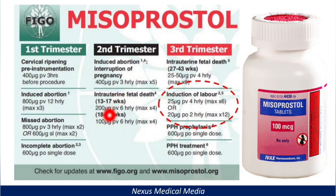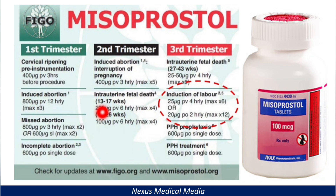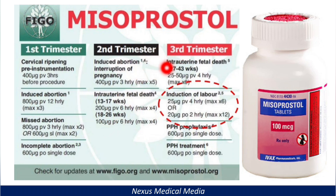In case of intrauterine fetal death between 13 to 17 weeks, give 200 micrograms sublingually every six hours. If intrauterine fetal death occurs between 18 and 26 weeks, reduce the dose to 100 micrograms per vaginally every six hours.